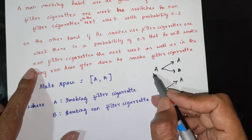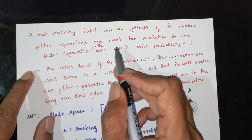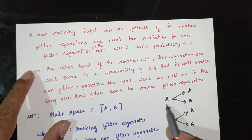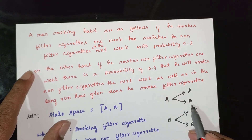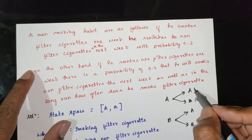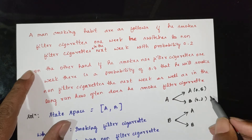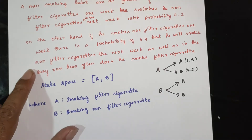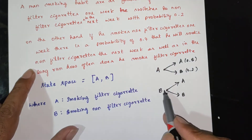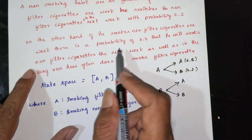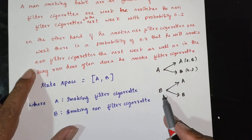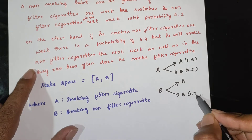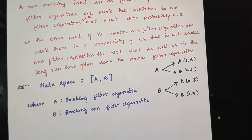If he smokes filter cigarettes one week, he switches to non-filter cigarettes the next week. On the other hand, if he smokes non-filter cigarettes one week, there is a probability of 0.7 that he will smoke non-filter cigarettes the next week. So the probability of switching to filter cigarettes is 0.3.